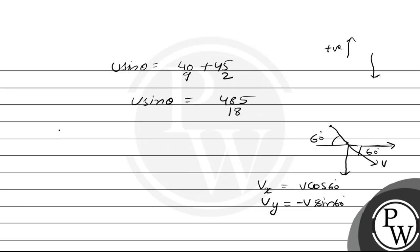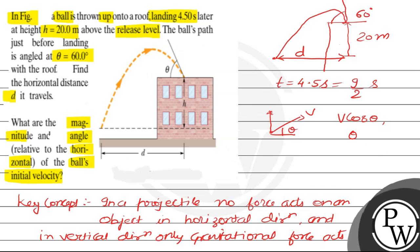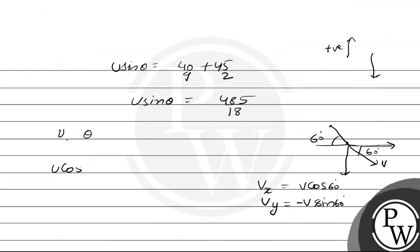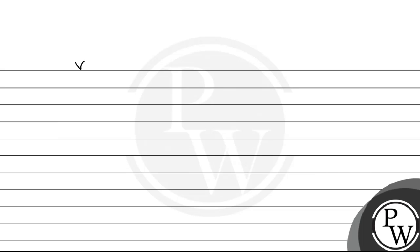Since no force acts in the horizontal direction, u·cosθ must equal v·cos60°. To evaluate v, we use the first equation of motion in the vertical direction: final velocity in y = initial velocity in y + acceleration·t. So −v·sin60° = u·sinθ − g·(9/2). Substituting u·sinθ = 485/18 and g·(9/2) = 45.